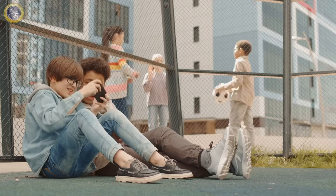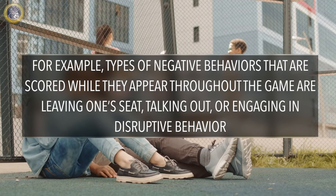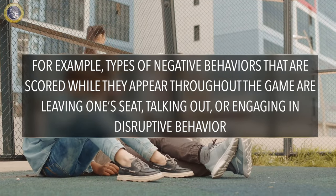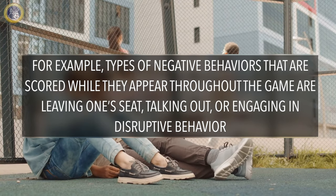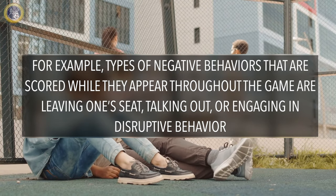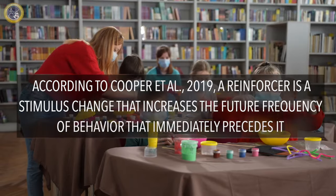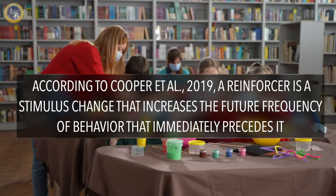The Good Behavior Game involves dividing the class into teams, creating simple rules, and using contingencies for breaking or following those rules. Examples of negative behaviors that are scored during the game include leaving one's seat, talking out, or engaging in disruptive behavior. These rules are clearly described to the students before the game starts.